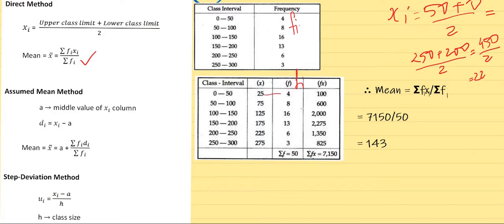Now we need fi into xi because we are doing the direct method. So fi into xi: 25 fours are 100, 75 eights are 600, 125 into 16 is 2000, and so on. Now find the total. Add all these and take the total. So it comes to be 7150. And similarly, here also we do the total of fi, so that is also 50. So 7150 upon 50, you get the answer as 143. So this was the use of direct method.